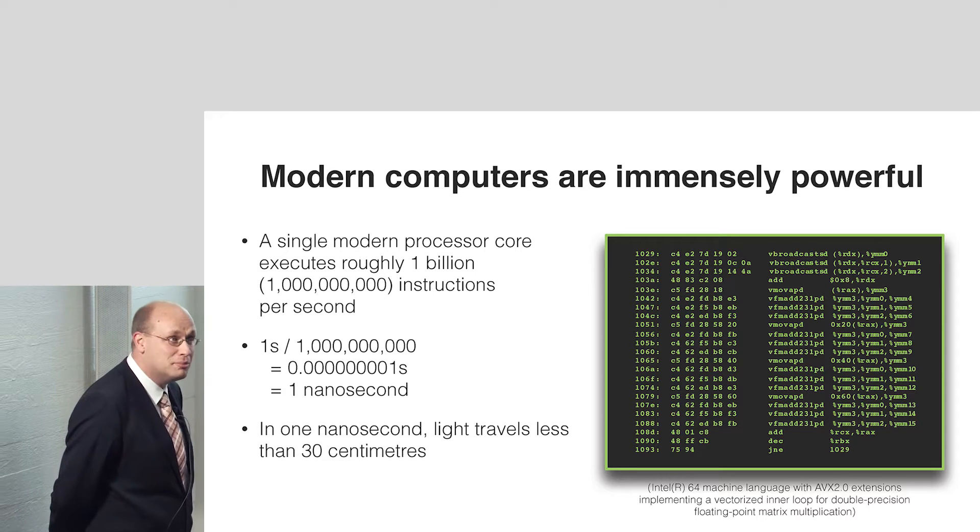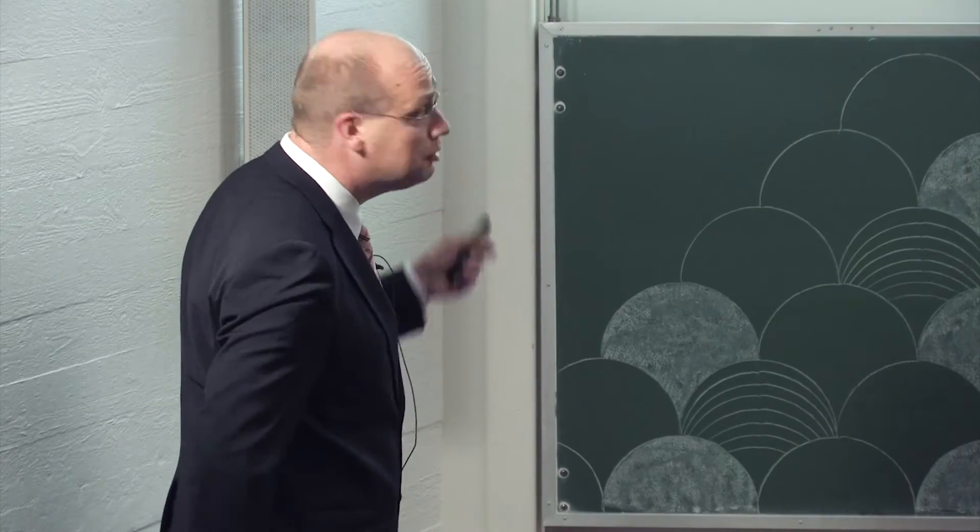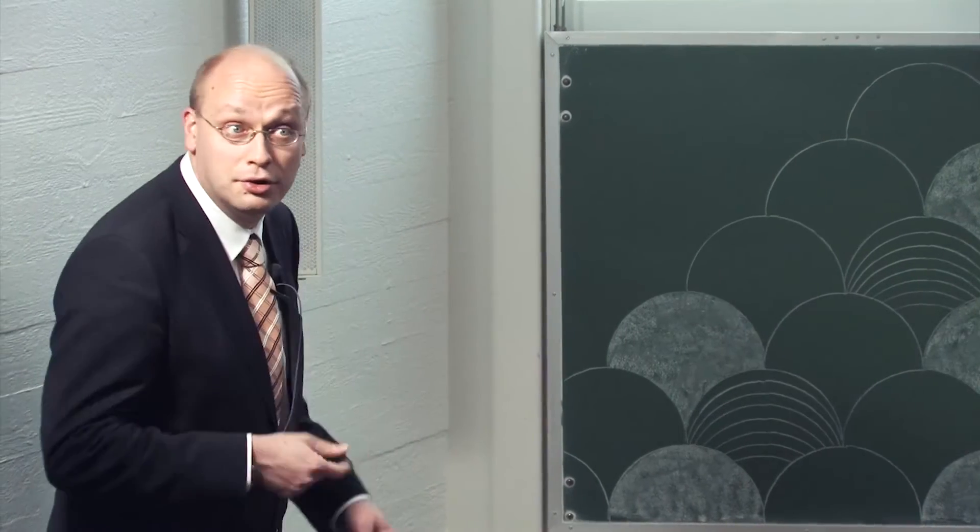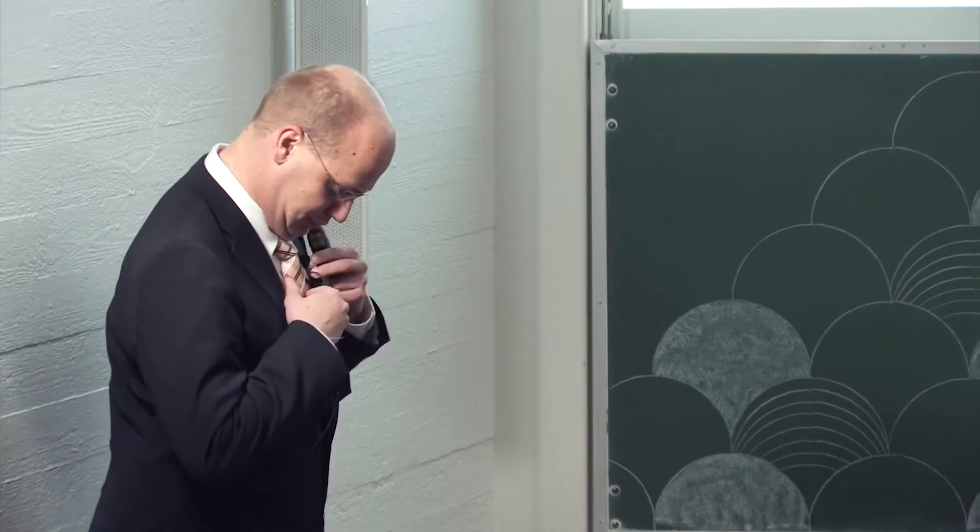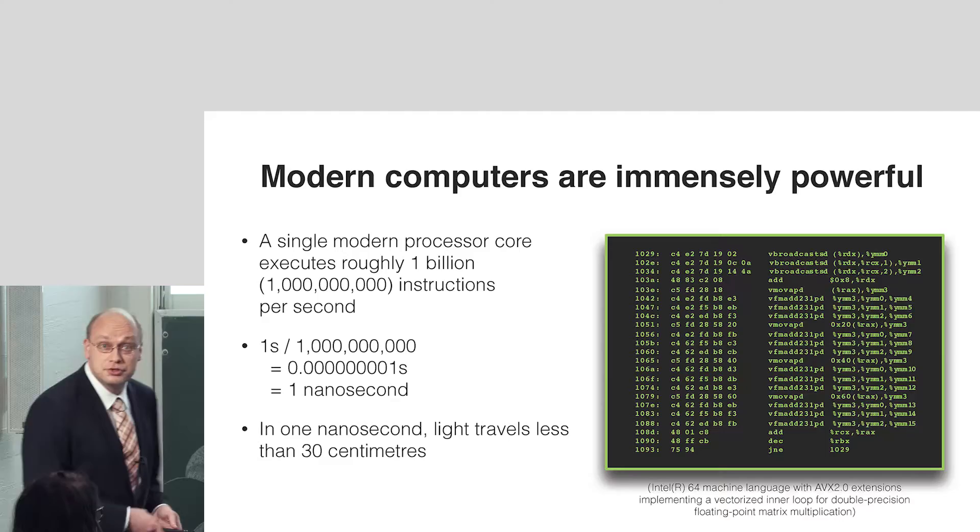You've probably heard that the processor in your computer has compute cores. So let's think about those first. A typical single modern processor core in your handheld device, in your laptop, it executes about 1 billion instructions per second.